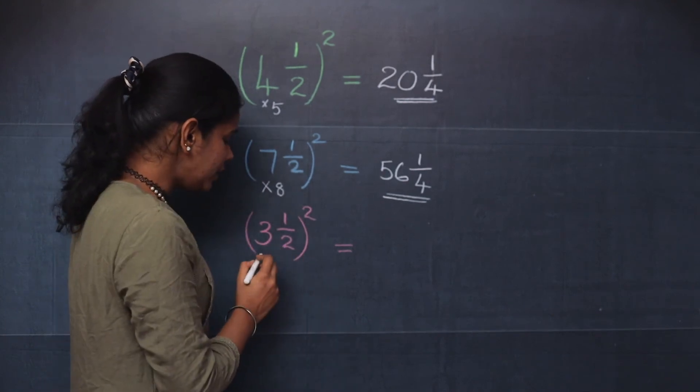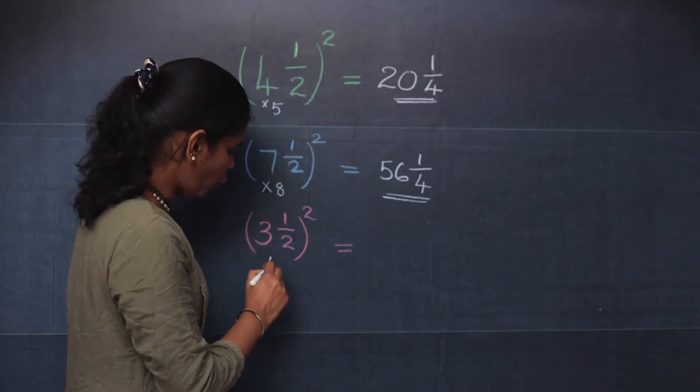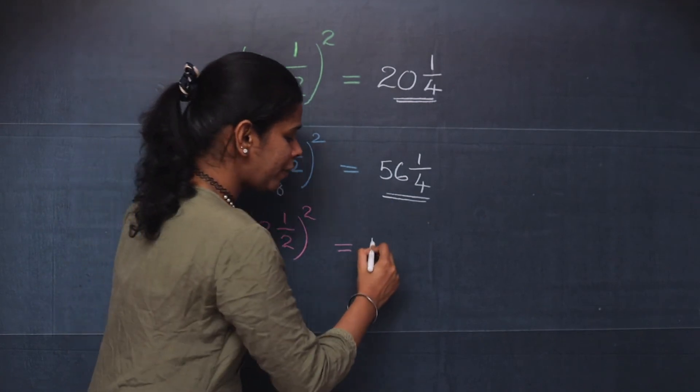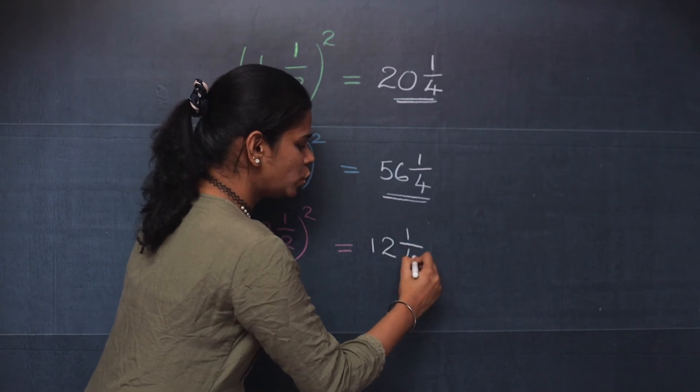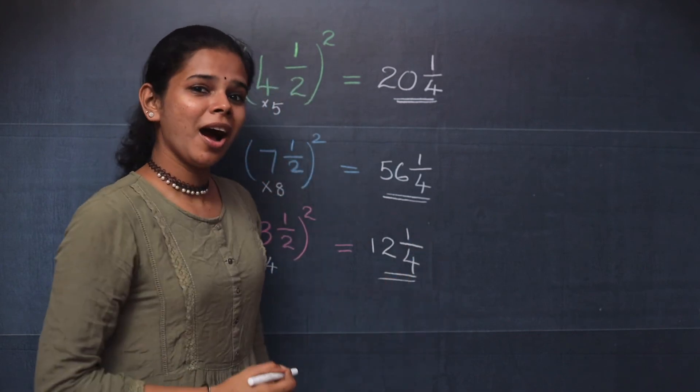Moving on to the last question, the number after 3 is 4. So 3 multiplied by 4 is 12, and the square of 1 by 2 is 1 by 4. So 12 1 by 4 is your answer.